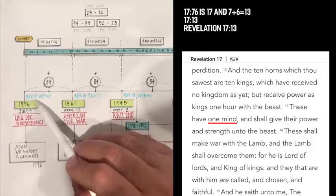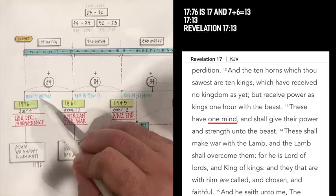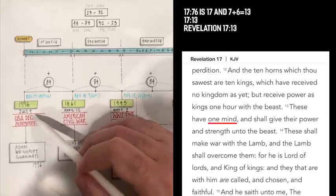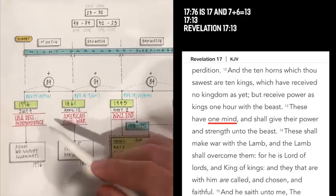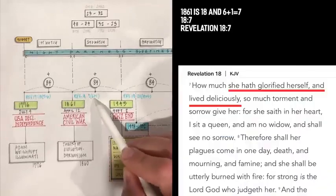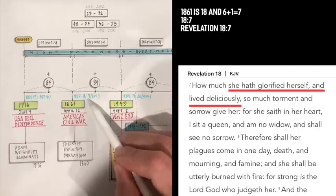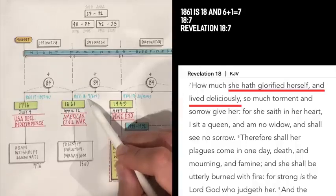Look at this. 17.76. What is that? 17 and 7 plus 6 is 13. So Revelation 17:13 says, these have one mind and shall give their power and strength unto the beast. That's a good representation. So look at this, 18.61. That's Revelation 18:6 plus 1 is 7. And Revelation 18:7 says, how much she has glorified herself and lived deliciously, so much torment and sorrow give her. For she said in her heart, I sit as a queen and I am no widow and shall see no sorrow.